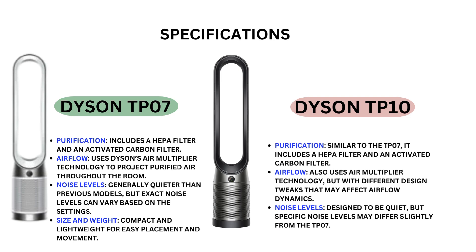Size and weight: compact and lightweight for easy placement and movement. Dyson TP-10 purification is similar to the TP-07 — it includes a HEPA filter and an activated carbon filter. Airflow also uses air multiplier technology, but with different design tweaks that may affect airflow dynamics.